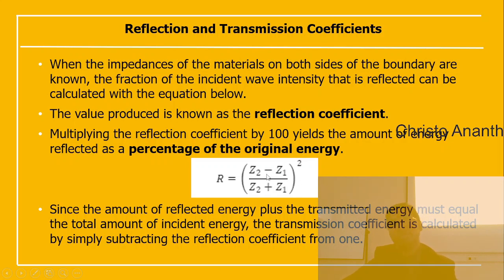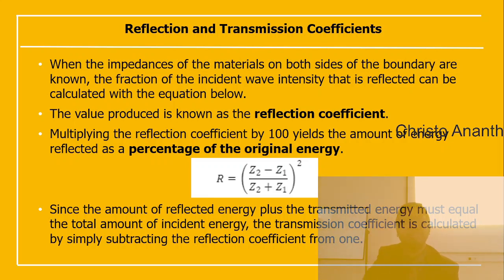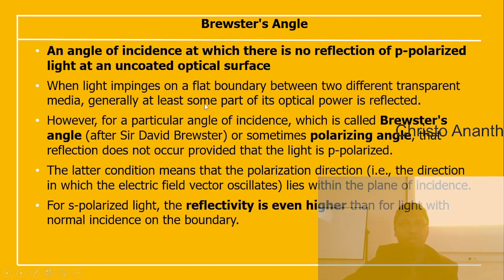The reflection coefficient is R = [(Z₂ − Z₁) / (Z₂ + Z₁)]². Multiplying by 100 gives the percentage of original energy reflected. Since reflected energy plus transmitted energy must equal incident energy, the transmission coefficient is simply 1 − R.